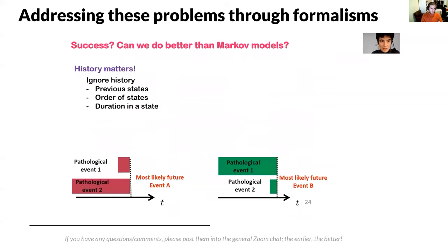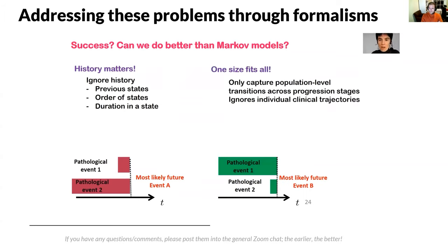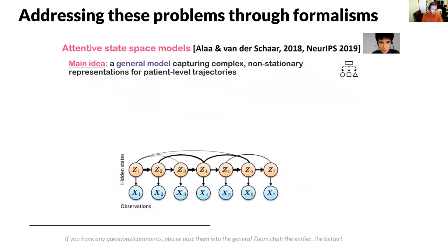Can we declare success with this formalism? In many settings, the hidden absorbing Markov model is sufficient. But in some scenarios the history of the patient matters — just considering the current state and duration in a state, which the hidden absorbing semi-Markov models assume, is not enough. They ignore the history — meaning the previous states the patient has been in and the order of these states, which may be informative about future events of interest. Also, they are one-size-fits-all, with transition probabilities the same across the population, ignoring individualized clinical trajectories. To cope with these limitations, we developed another formalism called attentive state-space models.